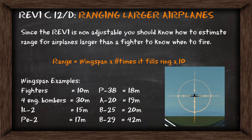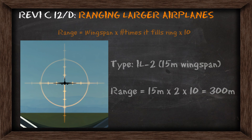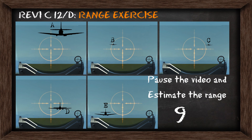The range equals the wingspan times the number of times it fills the ring times 10. Looking at this example, we have an IL-2 which can fit twice into the gunsight. So with a 15m wingspan times 2 times 10, it tells us it's 300m away. Pause the video here to practice the range exercise.